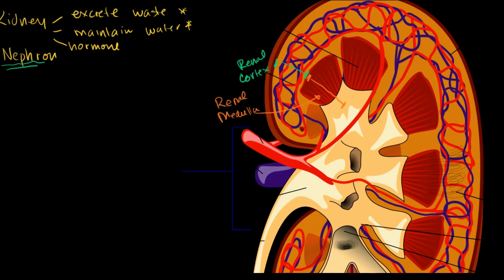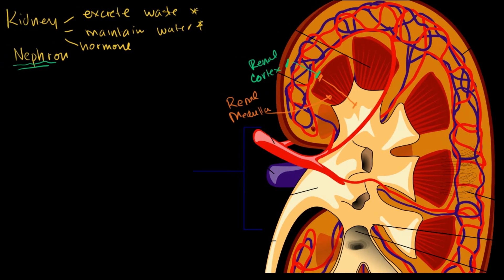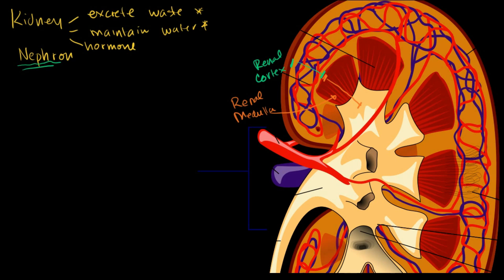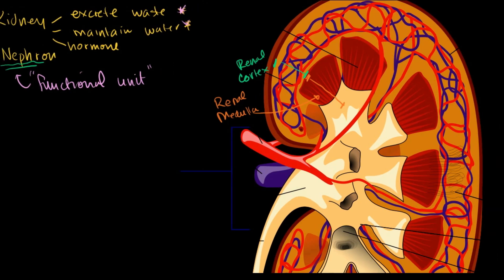The functional unit of the kidney is the nephron. The reason why it's called a functional unit is because that's the level at which these two things are happening — the waste excretion and the maintenance of the water level in our blood system. Just to get an idea of how a nephron fits in within this picture of a kidney, the artist — I got this picture from Wikipedia — tried to draw a couple of nephrons over here.